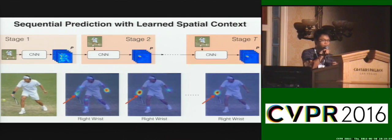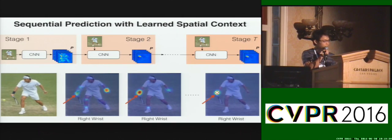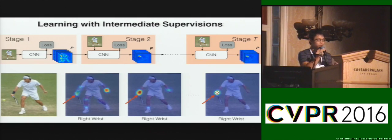With each stage we further refine to determine the pose. We simply repeat this process through each stage. Our architecture is fully differentiable.